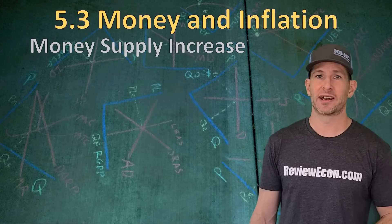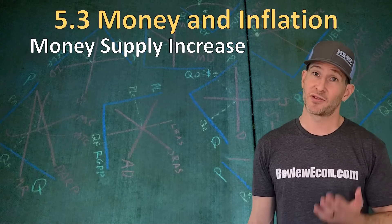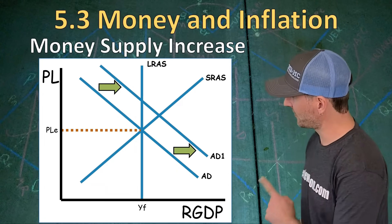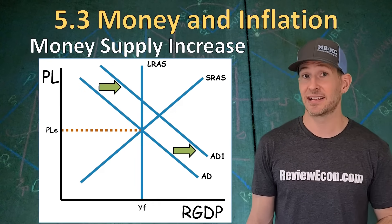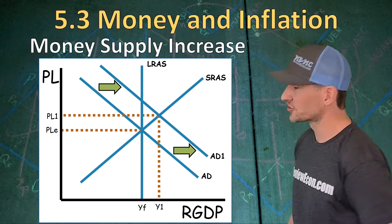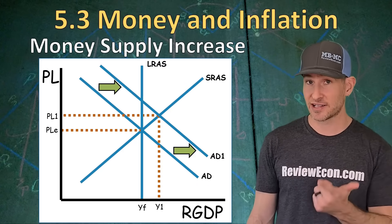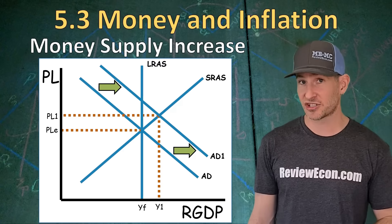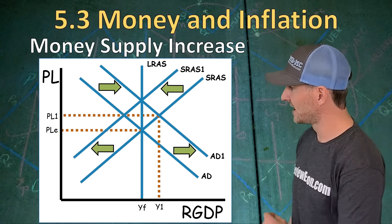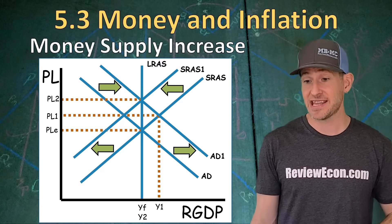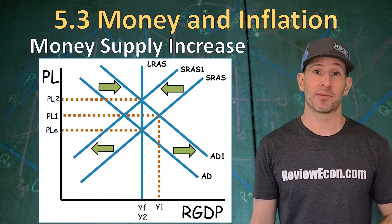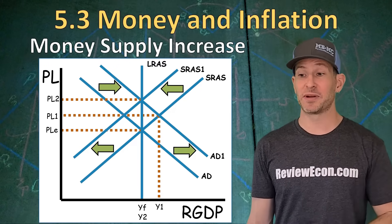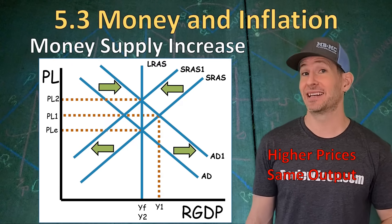The next thing we're going to look at is the long-run impact of an increase in the money supply. If the money supply increases, that's going to decrease the interest rate in the money market, which will increase gross investment within an economy, shifting that aggregate demand curve to the right. In the long run, that price level increases, meaning wages and other resource prices will have to increase as well. That increases production costs for businesses, shifting the short-run aggregate supply curve to the left. In the end, we end up right back at the same equilibrium output at YF with a higher price level at PL2. So in the long run, an increase in the money supply results in no change in real output, but an increase in the price level.